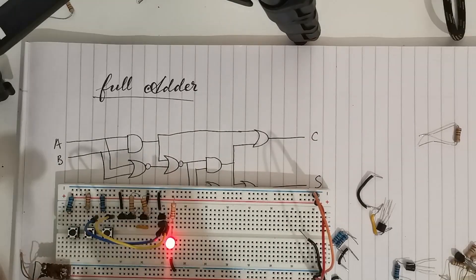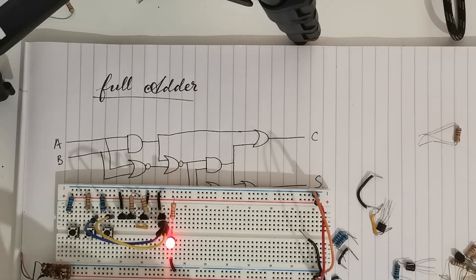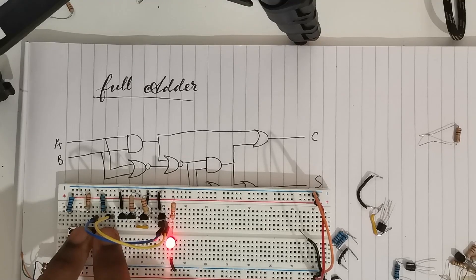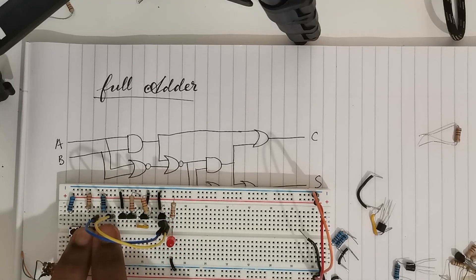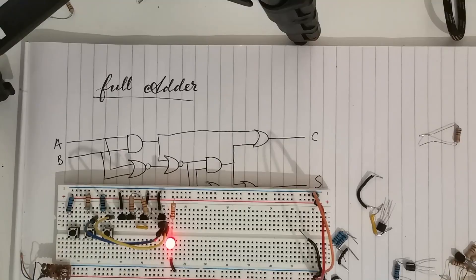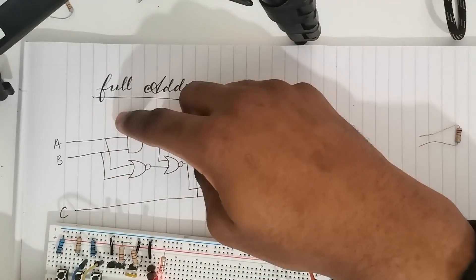Now let's test our NOR gate. It should stay on until any one of the buttons are pressed. So if I press this, it turns off. If I press this, it turns off. And both, it stays off. So this first part of our circuit works perfectly.